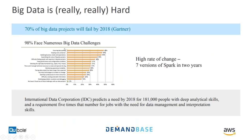Big data is hard — really, really hard. Gartner reported that something around 70% of big data projects would fail by 2018. They cited various reasons: lack of highly skilled technical folks in the industry, a high amount of confusion based on the large number of overlapping tool sets, and the fast-paced evolution of tools out there. Open source technologies like Apache Spark alone went through seven or eight different versions in just the last two years.